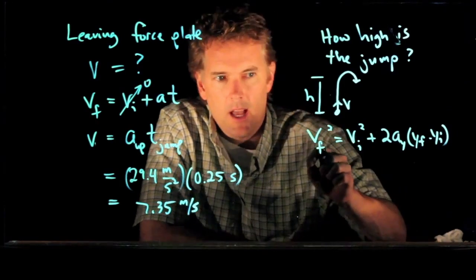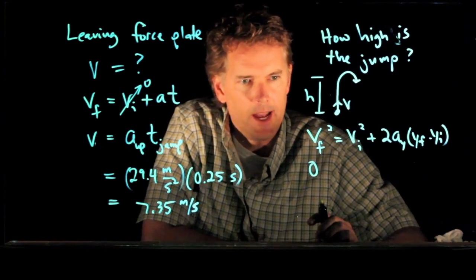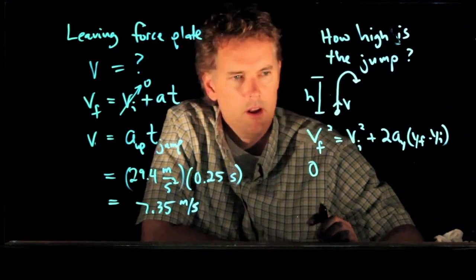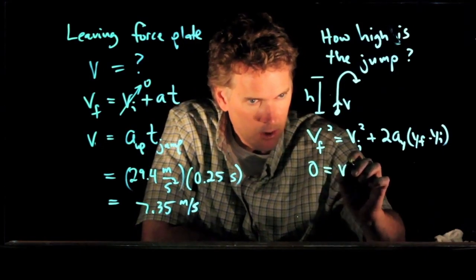V_F squared is 0. When you get to the top of that jump, you're moving at a speed of 0. V_I squared is just this V that we just solved for, so we'll call that V.